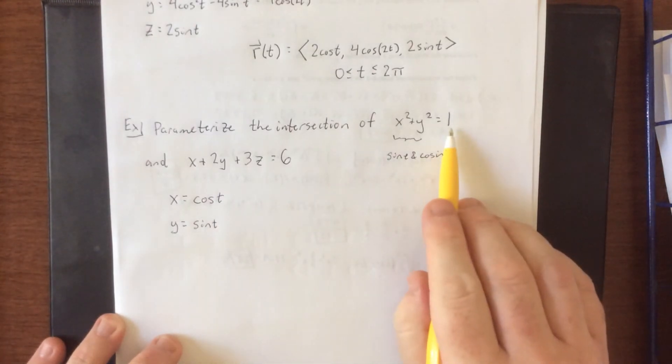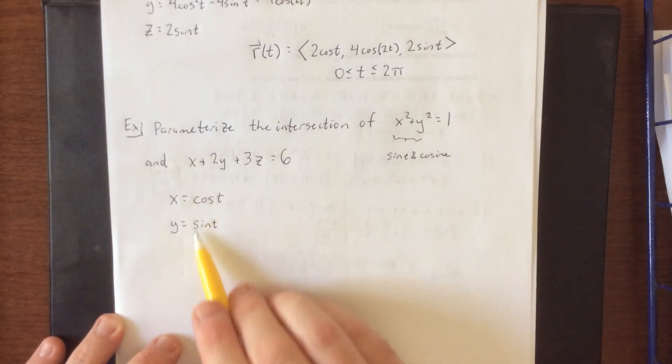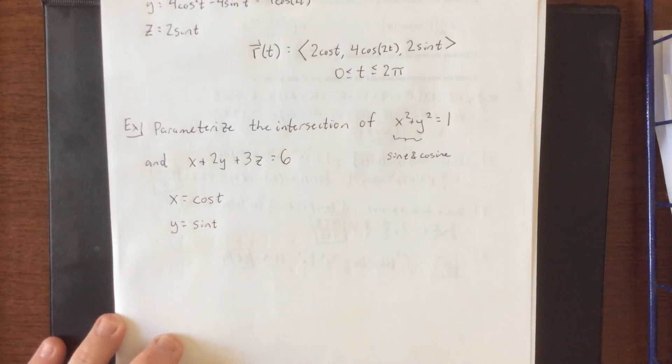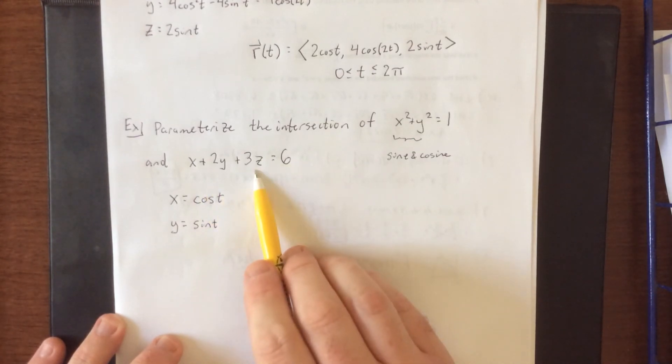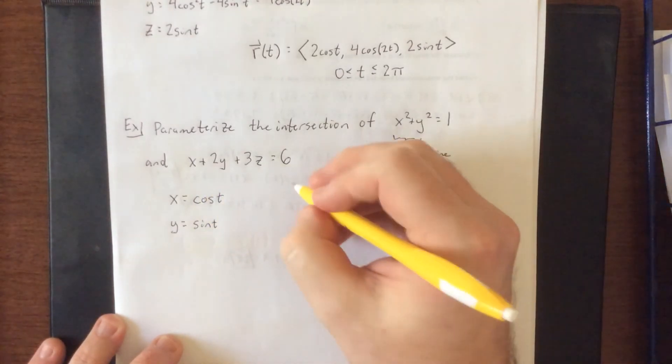Radius of the circle in this case is one, which is why there's no coefficient listed in front of those. Now that we have x and y parameterized, if I plug both of those parameterizations into this formula, the only variable left is going to be z. So then I can solve for z right after.